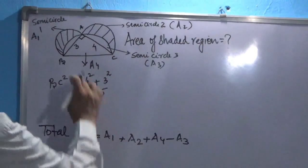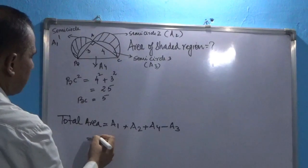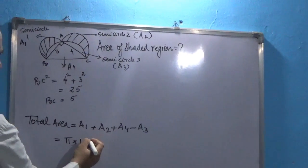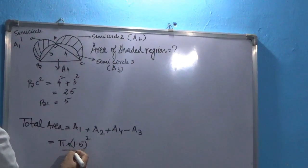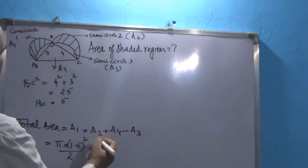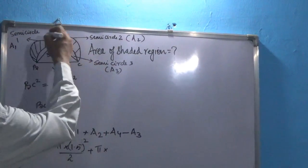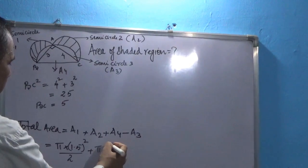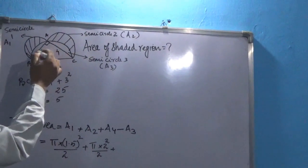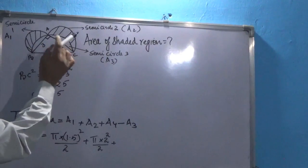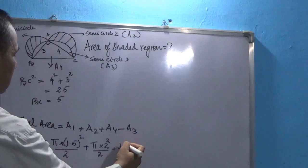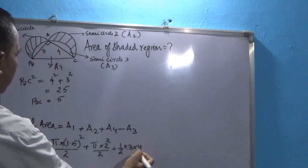Area 1 is a semicircle: the diameter is 3 so the radius is 1.5, giving π × 1.5² / 2. Similarly for the second semicircle: the diameter is 4 so the radius is 2, giving π × 2² / 2. For the triangle, since it is a right angle triangle, we take base 3 and height 4, so the area is half × 3 × 4.